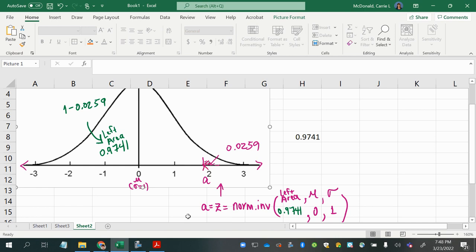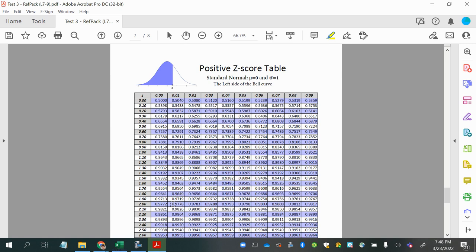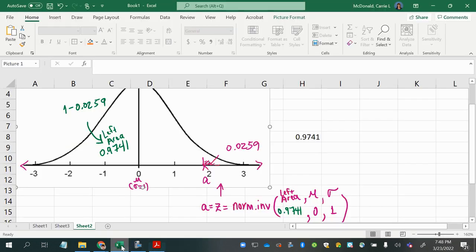Well, when I go to look at my Z score table, I know that everything in the Z score table is set up with left probabilities. So I do want to look in the positive Z score table, and I'm going to look up the area to the left of the Z score I'm looking for, which I figured out to be 0.9741.